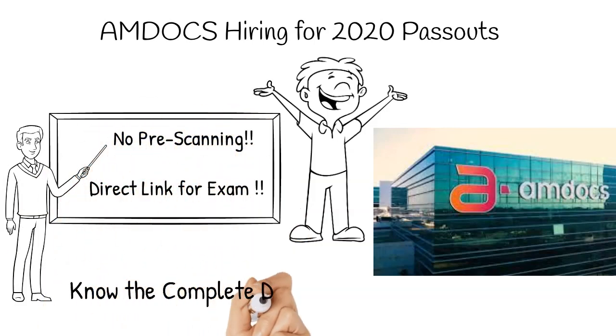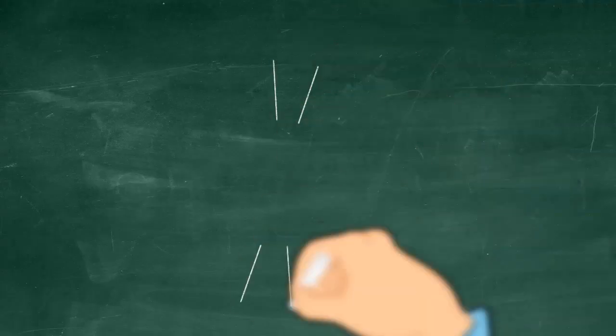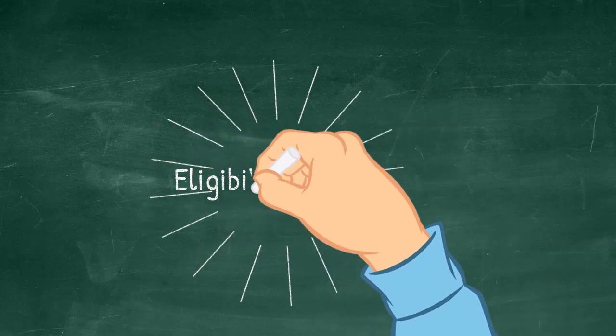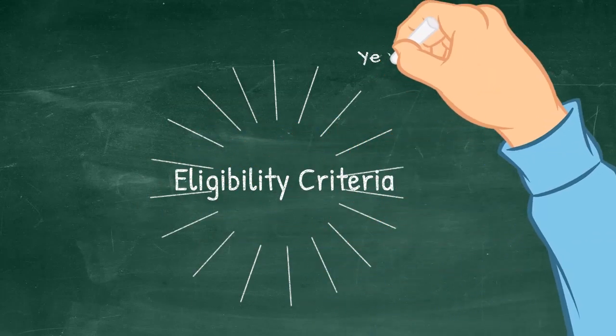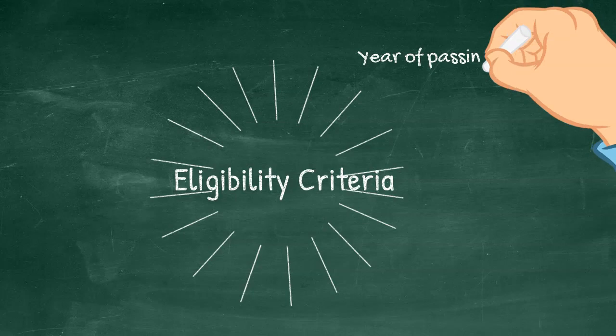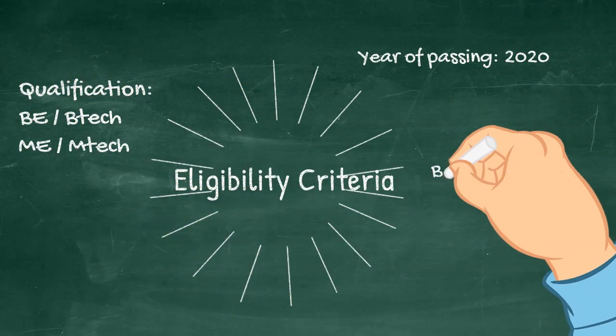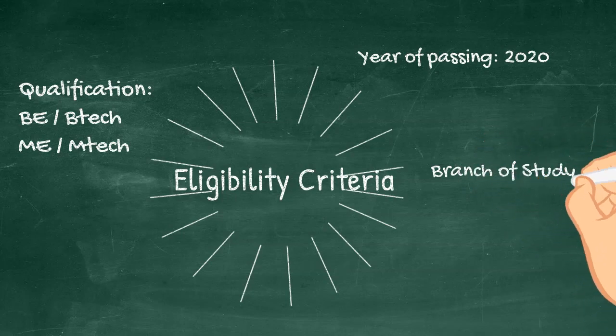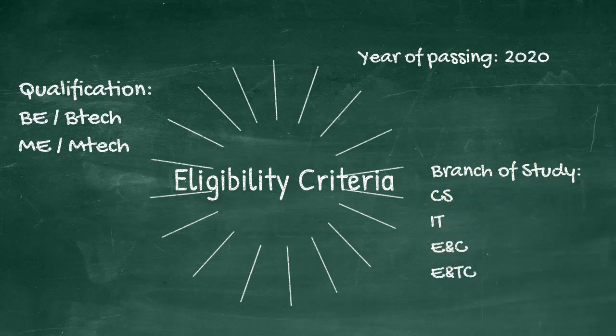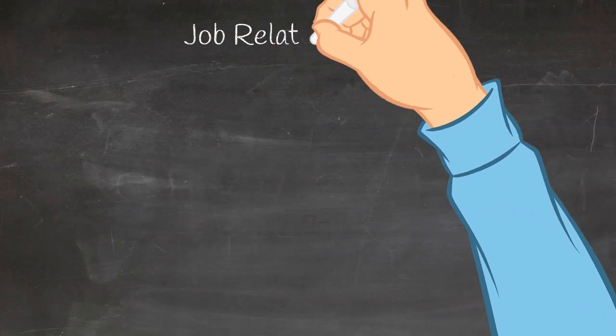Let's start with the eligibility criteria. The year of passing allowed is 2020 strictly. Qualification: BE, B.Tech, ME or M.Tech. Branch: CS, IT, Electronics, and Electronics Telecommunication.